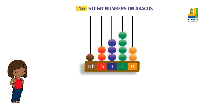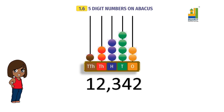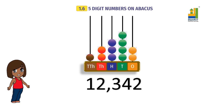Then we insert the beads on the spikes. So here we have one ten thousand, two thousand, three hundred, four tens, and two ones. If you have done the expanded in short form, you know that this translates to one, two, three, four, two — that is, 12,342.